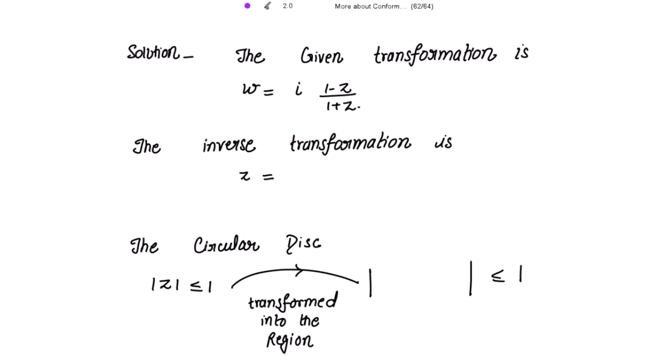The given transformation is w = i(1 - z)/(1 + z). We write the inverse transformation first, expressing z in terms of w. From the given transformation, we get z = (i - w)/(i + w). Under this transformation, the circular disk |z| ≤ 1 is transformed into a region we need to find. Writing mod of z using this inverse transformation gives |( i - w)/(i + w)| ≤ 1.